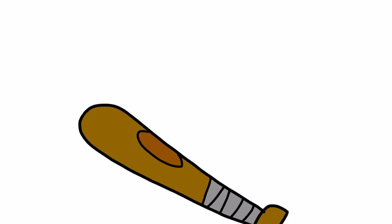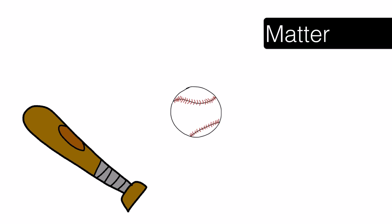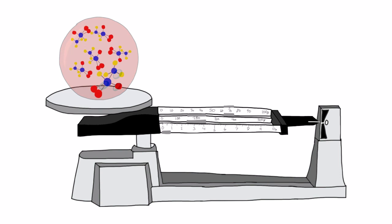Mass. All objects that take up space are made of matter. The mass of an object is the measure of the amount of matter inside the object.